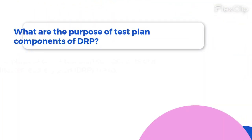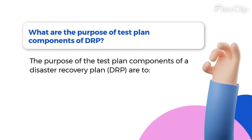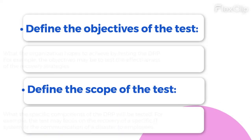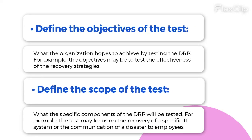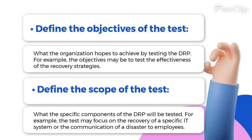Asalamualaikum commerce crazehub. What are the purpose of test plan components of DRP? The purpose of the test plan components of a disaster recovery plan DRP are to define the objectives of the test — what the organization hopes to achieve by testing the DRP. For example, the objectives may be to test the effectiveness of the recovery strategies.